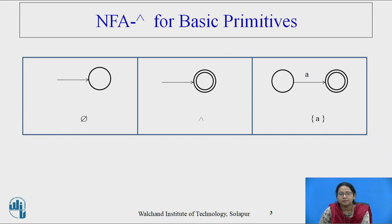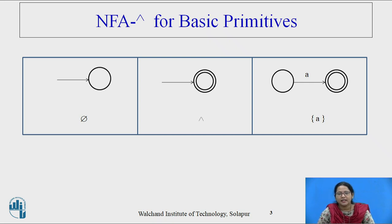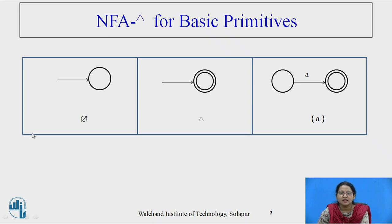The main question here is how to draw NFA with a null transition. In DFA we draw by checking each and every time whether a particular string is accepted at the final state or not. In NFA with a null transition, without processing anything the machine may move from one state to another. These are the basic primitives: the first diagram indicates a machine with empty set, the second indicates a machine accepting null string, and the third is for a machine accepting symbol 'a'.